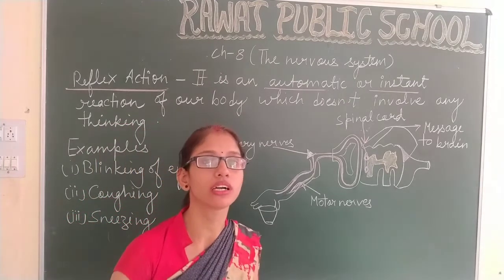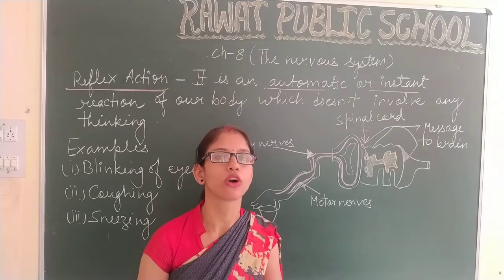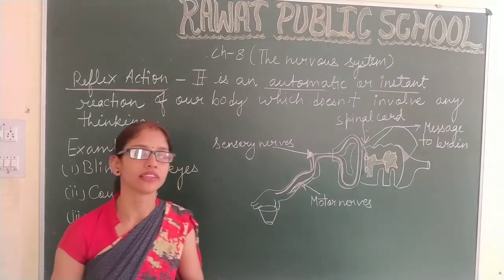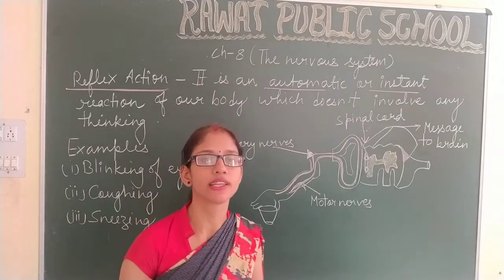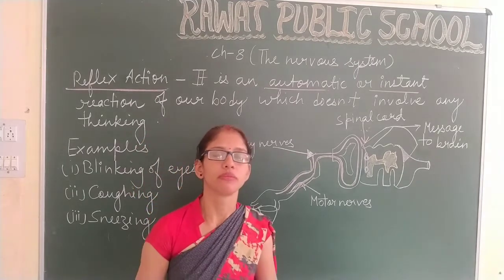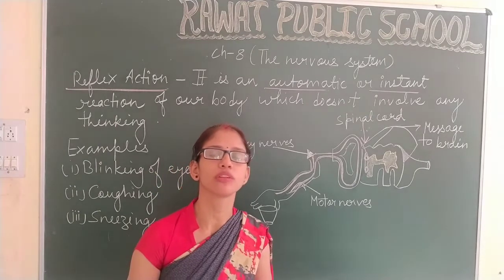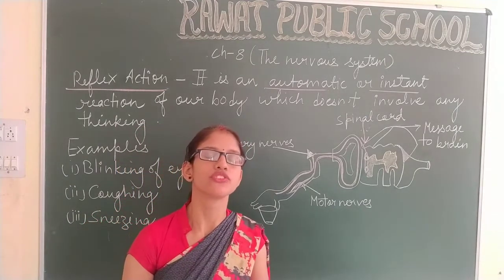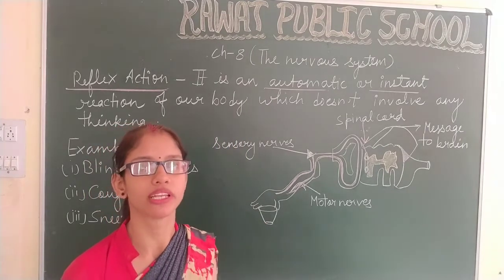After that, we discussed about the brain — it is the central controlling unit of our body, and the different parts of the brain are cerebrum, cerebellum and the medulla oblongata. We discussed that cerebrum is the largest part of the brain, and at the back side of the brain there is the medulla oblongata, which is known as the stem of the brain, and it connects the spinal cord to the brain.